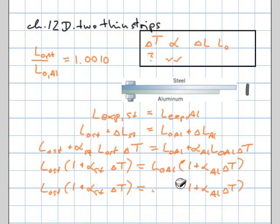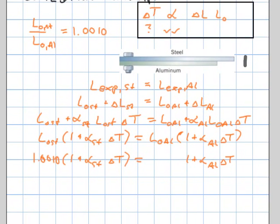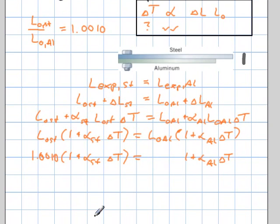So I divide by that length of the aluminum, and therefore on the left hand side I have that factor, 1.0010. And the next step, I'm going to multiply this in here, so I'm going to have 1.001 plus 1.001 times the alpha and the delta T.